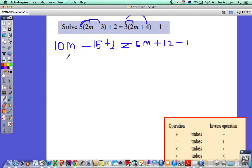Now let's collect like terms. We've got 10m, negative 15 plus 2 is minus 13, equals 6m. There's nothing else to collect with the m's on this side, so it's 6m. 12 minus 1 is plus 11.